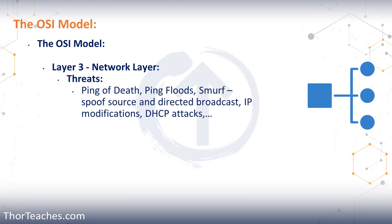With layer 3, since we're moving beyond a local network and onto the internet, we also start seeing many more different types of attacks, which we will cover later. But those can be ping of death, ping floods, smurf attacks, spoof source addresses, direct broadcasts, DATP attacks, and so on. We are going to cover all of those a little bit later.